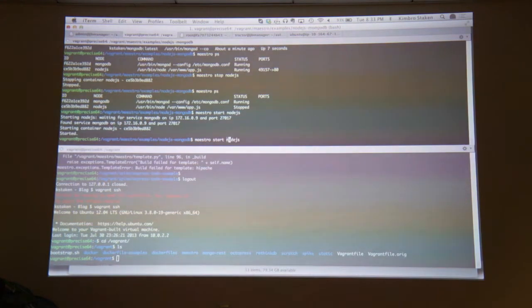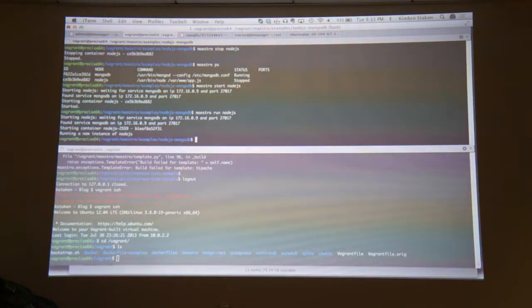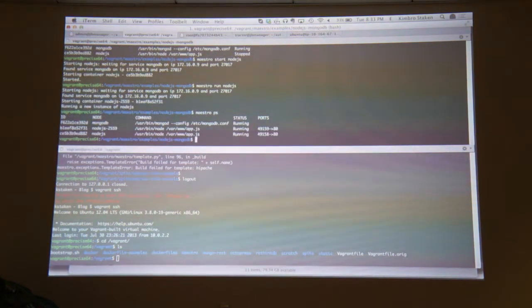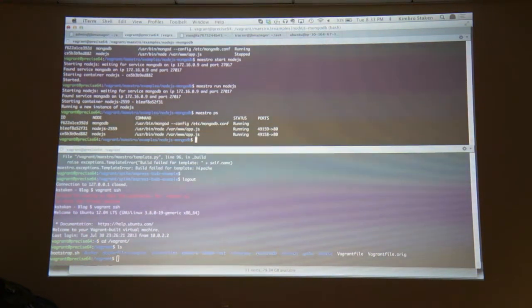You can also run additional. So we can do run Node.js, and this will run another copy of Node.js and put it into the environment. And it will be published on a different port. If this had a load balancer or something in there that was depending on the Node.js template, then the load balancer could reconfigure itself to provide that. This example doesn't have that.